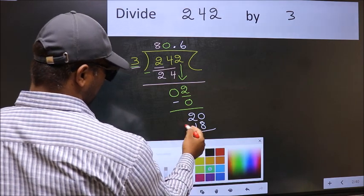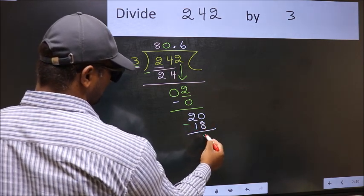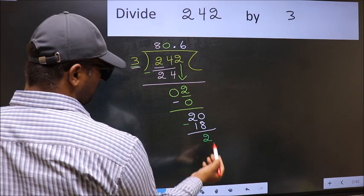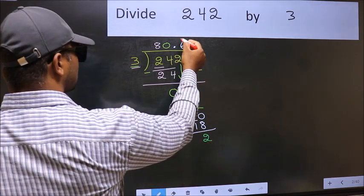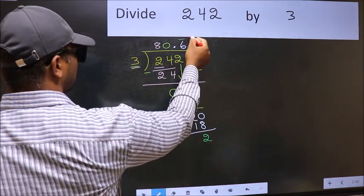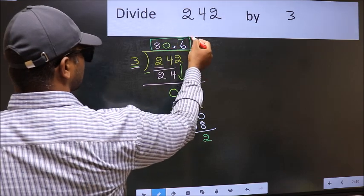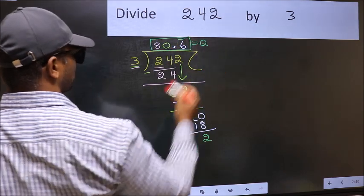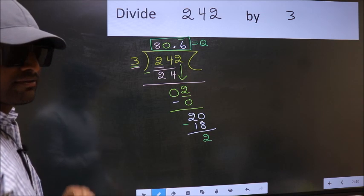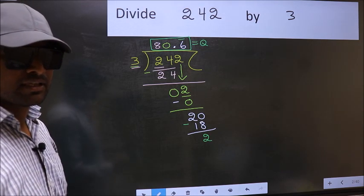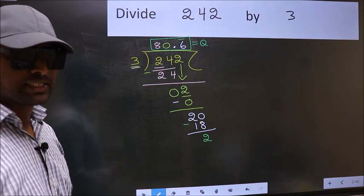Now you should subtract. 20 minus 18, 2. We got 2 again. That means we get bar on this number. So this is our quotient. 20 minus 18, 2. Did you understand where the mistake happens? You should not do that mistake.